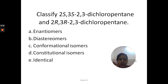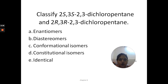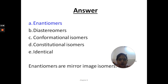The first question is: classify 2S,3S-2,3-dichloropentane and 2R,3R-2,3-dichloropentane as an enantiomer, diastereoisomer, conformational isomer, constitutional isomer, or identical. The answer to this question is enantiomer. The configuration at the second and third carbon atoms is S in one isomer, whereas in the other it is R. So they are mirror images of each other, and hence the answer is enantiomer.